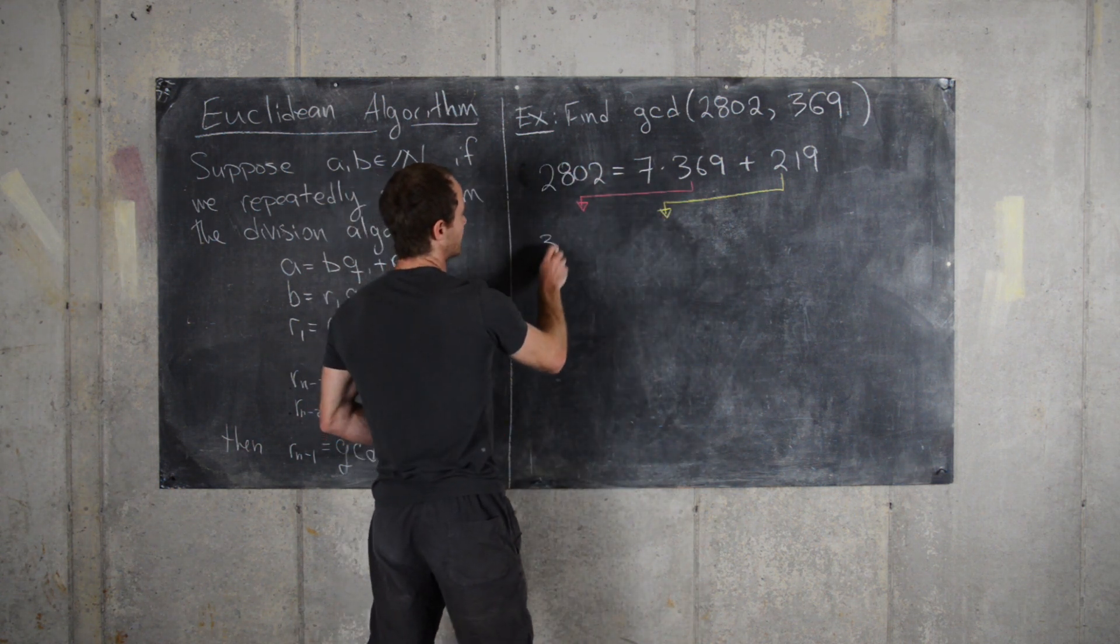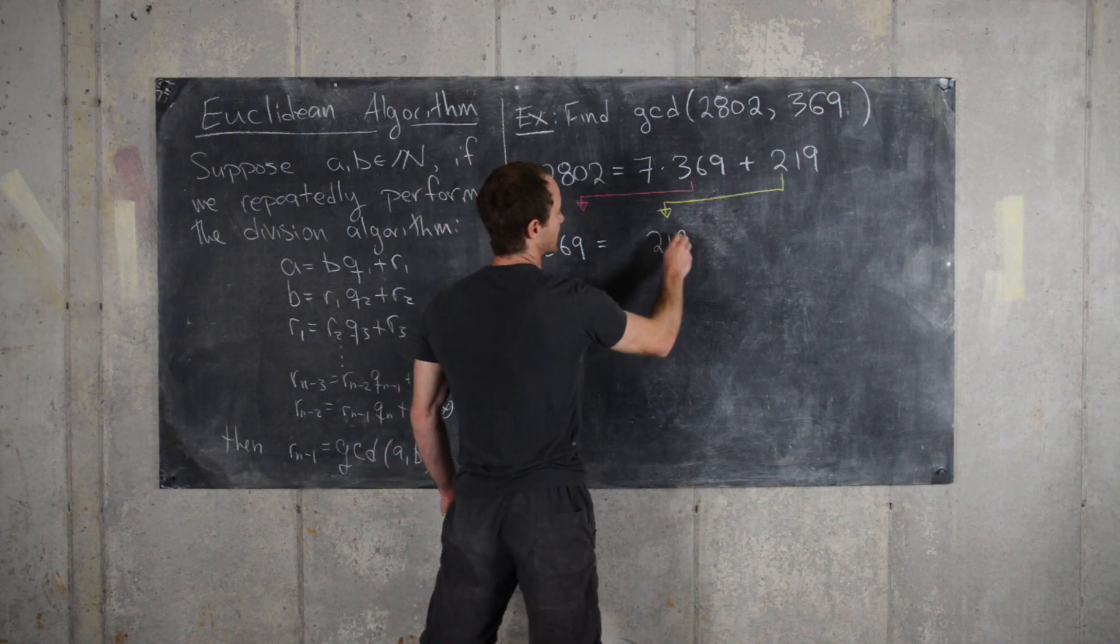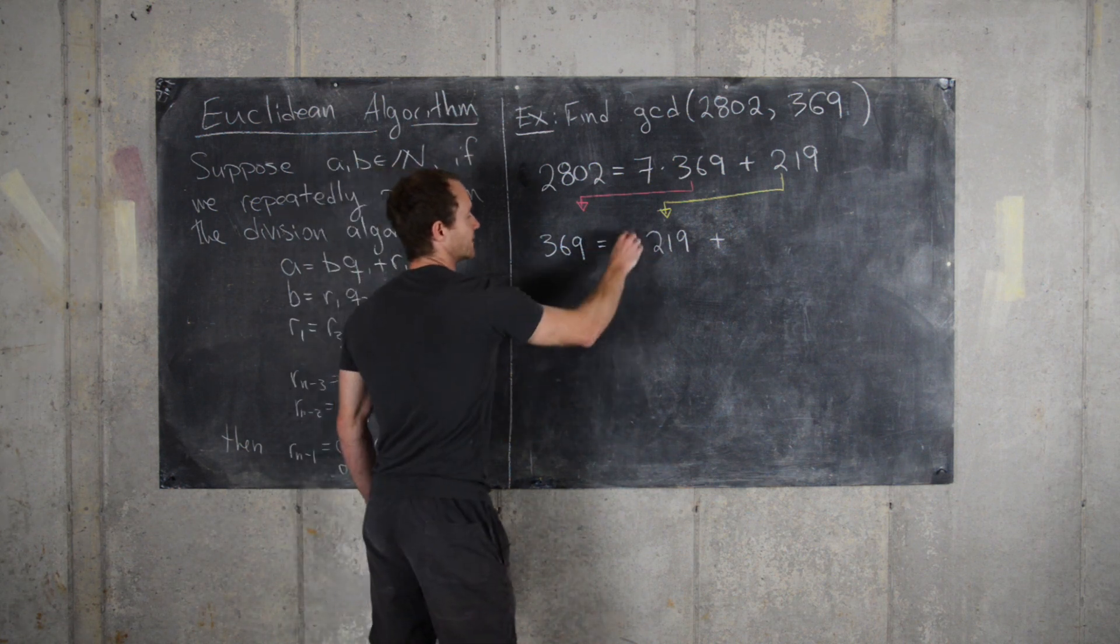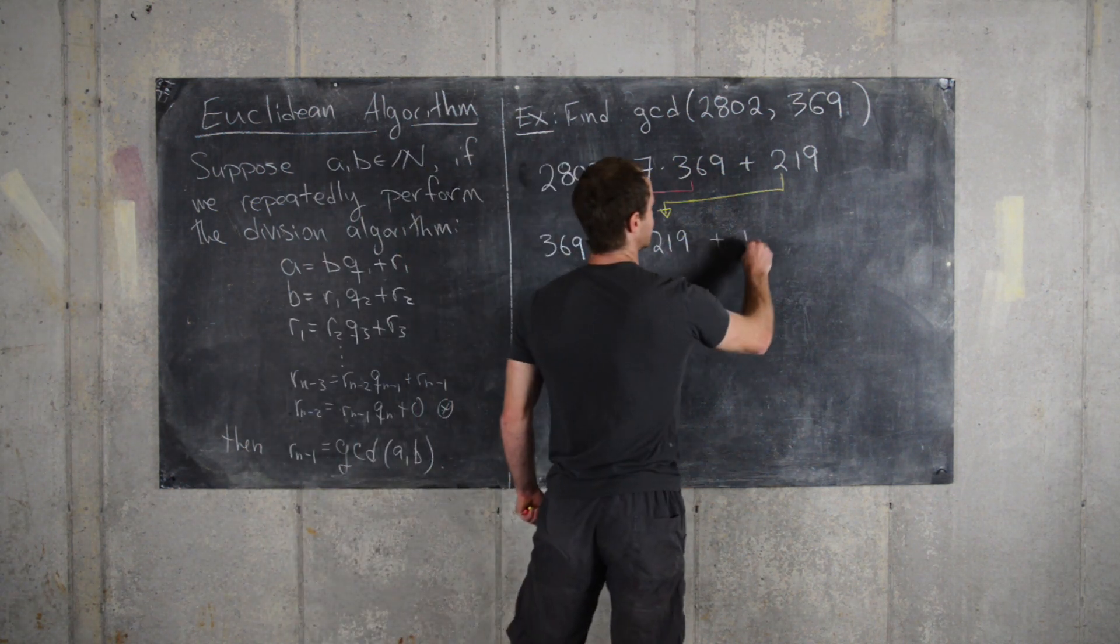So let's see, we get 369 equals something times 219 plus a remainder. So it's pretty obvious that we need 1 times 219 and then our remainder is 150.